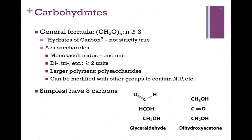A monosaccharide only has one unit. A disaccharide would have two. A trisaccharide would have three, and so forth. If they're a medium-sized polymer, we call it an oligosaccharide, but for larger polymers, we call them polysaccharides. We can also modify that general formula to include other groups that would contain nitrogen, phosphorus, and so forth. So we might have atoms other than simply carbon, hydrogen, and oxygen in our carbohydrates, as we'll see.